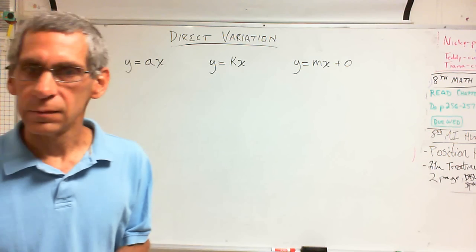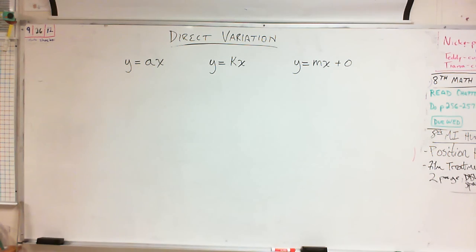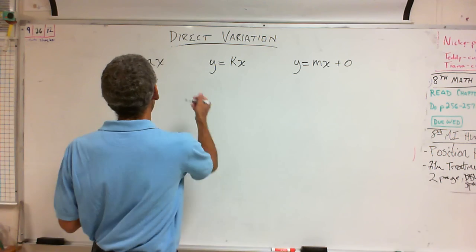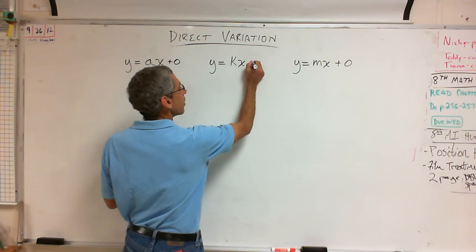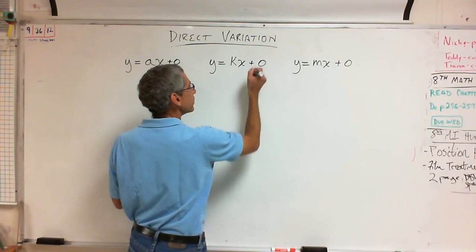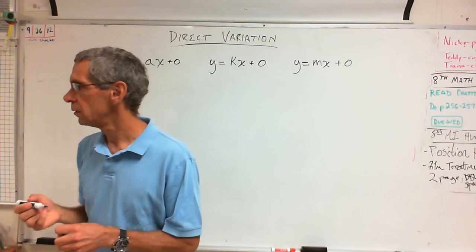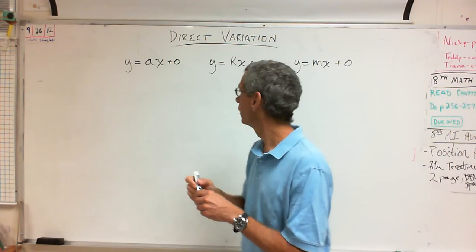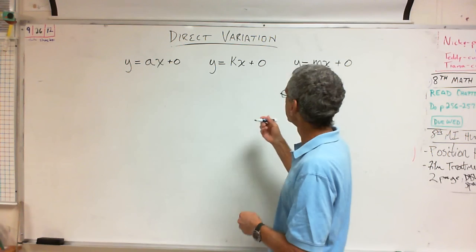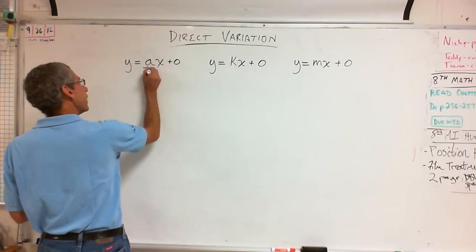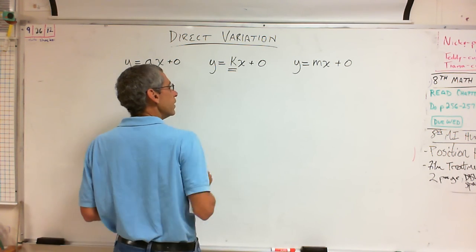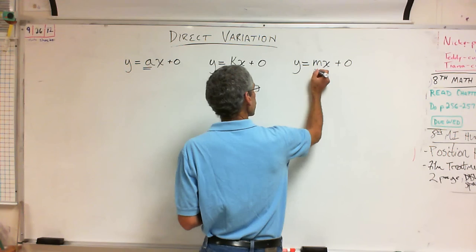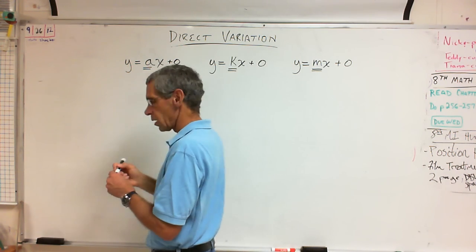It's not really different — they all have that zero, but they're just not showing it. They all have a plus zero, but they're not showing it. What else is different? The letters. In our book, they have an A. In most other books, they have a K. And in Gary's world, they have an M.